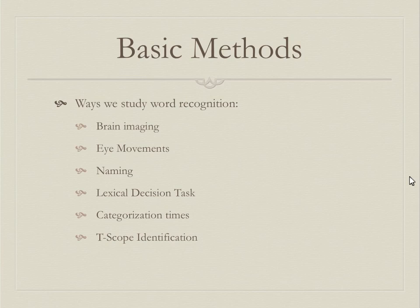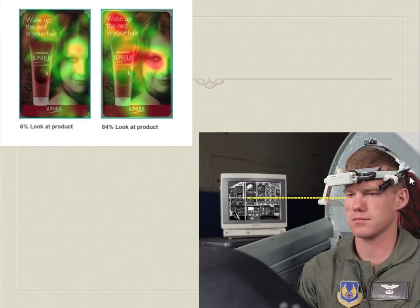The different ways we can study word recognition include brain imaging — which we'll do towards the end — eye movements, which we'll start with, and behavioral tasks: a naming task, a lexical decision task, categorization tasks, and T-scope identification tasks. We're going to talk about each one of these. We'll start with eye tracking research because it's so interesting.